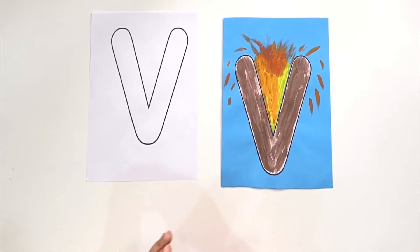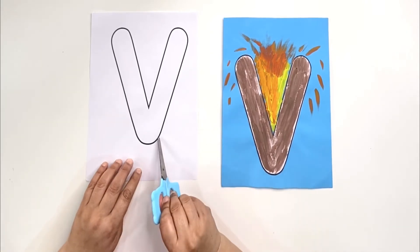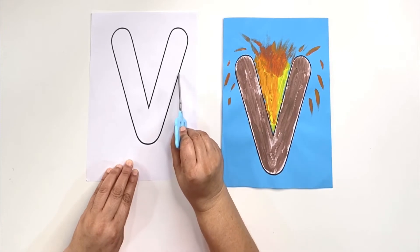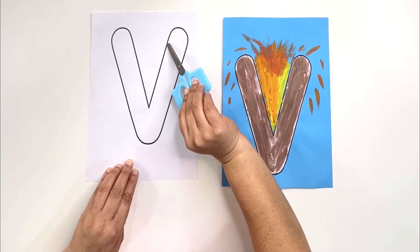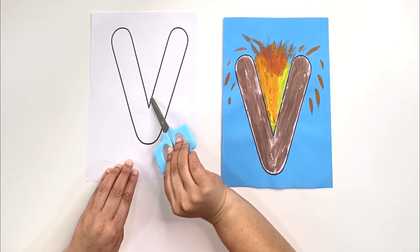First you're going to take your scissors and you are going to cut all along the black line so that you can have the letter V cut out.